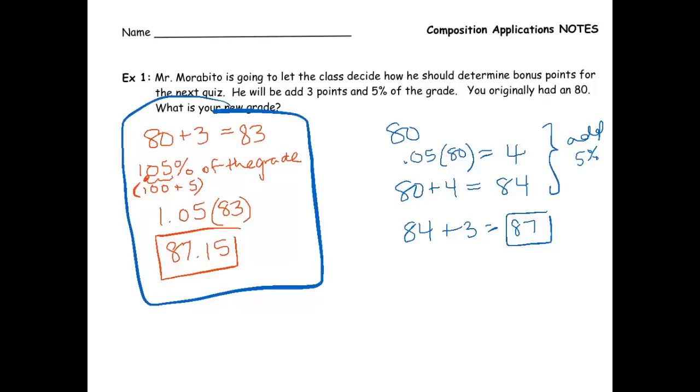And it kind of makes sense if you think about it. When you're taking a percent of a bigger number, you're going to get a bigger number. So if you want to increase your grade, you want to add the points, then take that percentage.